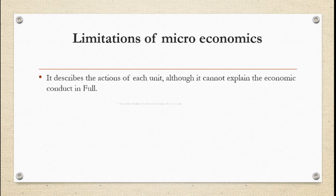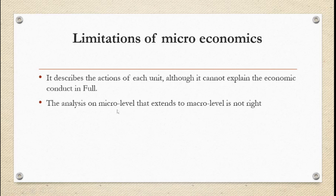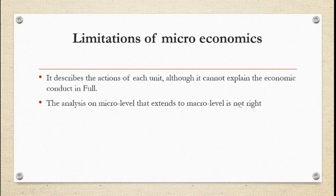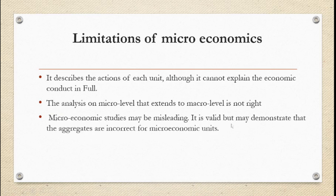For example, we have 138 crore people in our country. From those, if 100 crore people are earning income, I can get exact figures for each individual. But when those 100 crore people come together, what would be the pattern for the whole country — that is beyond what microeconomics can describe. The next limitation is that analysis at micro level extended to macro level is not right.